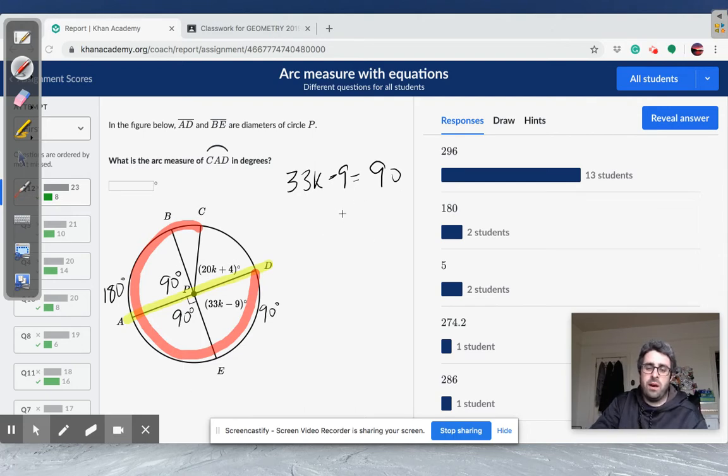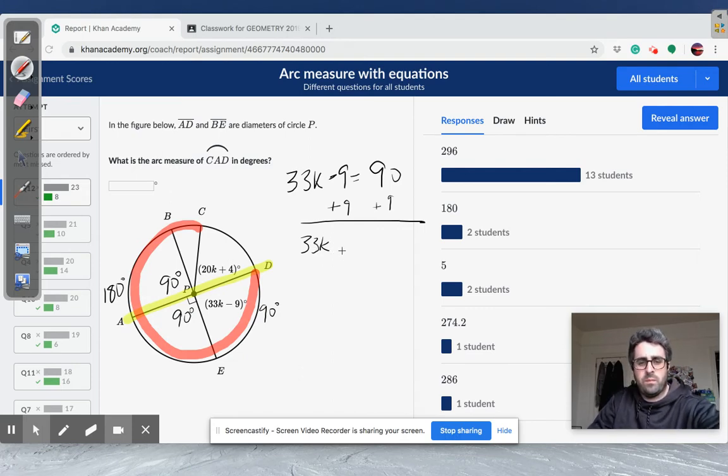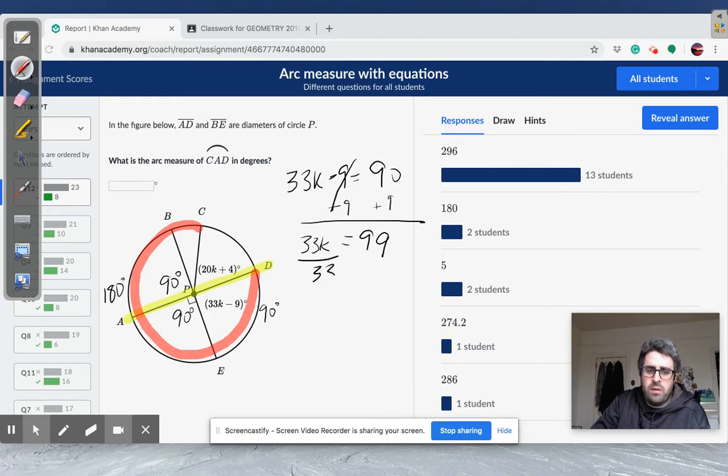So I can use that to solve for K. I'm simply solving the equation using inverse operations. So we have 33K equals 99. Divide by 33 to get K equals 3. So K is 3.